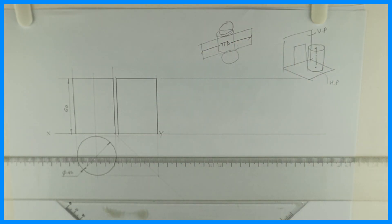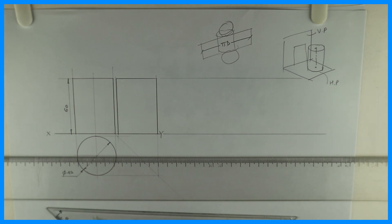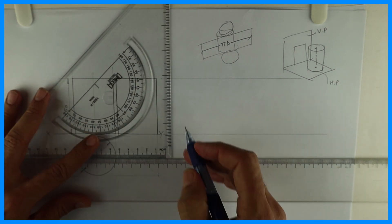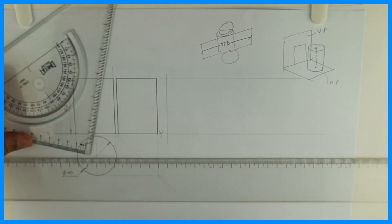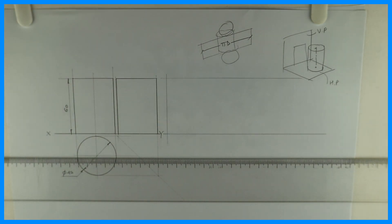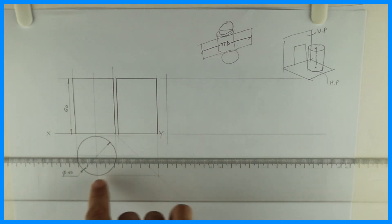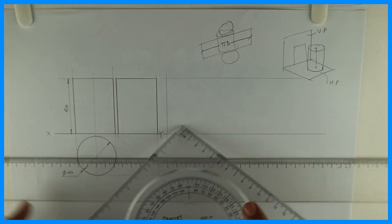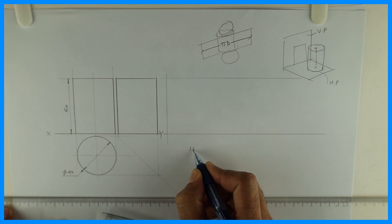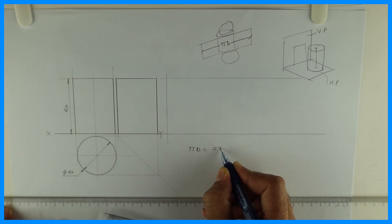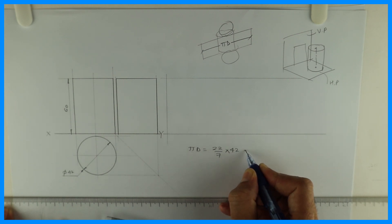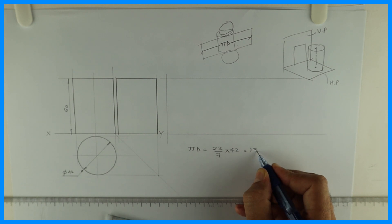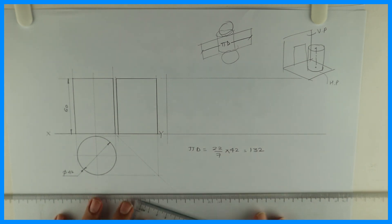We are going to do first lateral development, that means this length. So this is how much? Pi into d. It will be equal to circumference. So first we'll calculate how much is pi into d. See, we'll draw one line. Now we'll take pi into d, that is 22 by 7 into diameter 42. See, this is pi d. 22 by 7 into 42.